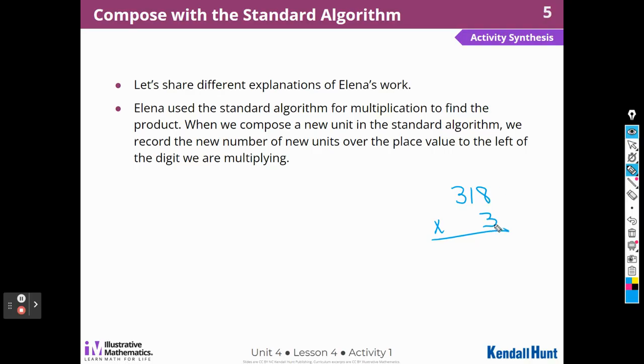Alina used the standard algorithm for multiplication to find the product. When we compose a new unit in the standard algorithm, we record the new number of new units over the place value to the left of the digit we're multiplying. So when Alina was doing 318 times 3, and she had a new unit, right? So 24, I can put the 4 in the ones column, but I'm going to have to put that new unit, those two tens, to the left of the ones because it belongs in the tens column.